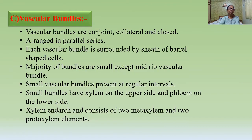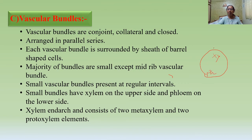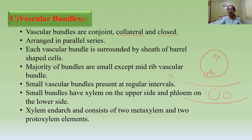Next we will see the vascular bundles. The vascular bundles here are conjoint, collateral, and closed. Conjoint means both xylem and phloem are present in the same bundle. Closed means there is no cambium present. Collateral means the phloem is present only on one side of the xylem. These vascular bundles are arranged in a parallel nature, as seen in this transverse section.